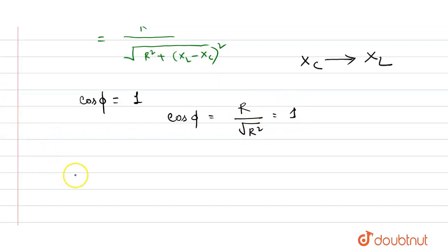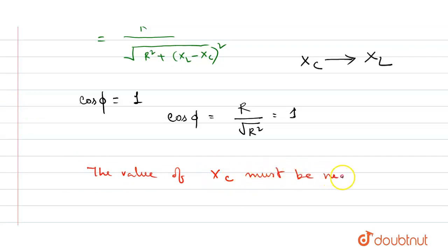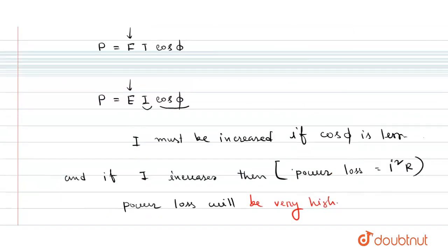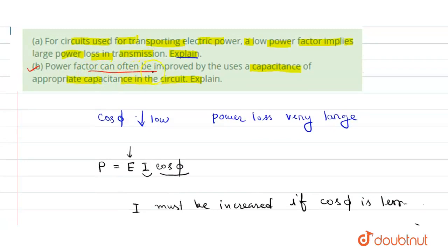So our condition will be that the value of XC must be nearly equal to XL, so that cosφ equals R divided by the square root of R², which equals 1. So the power factor can often be improved. If the power factor value is not unity, we can improve it by changing the ratio R/Z to unity, but for this we have to use a capacitor whose capacitive reactance is equal to the inductive reactance.